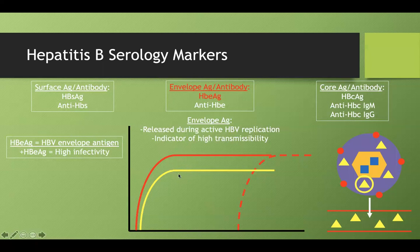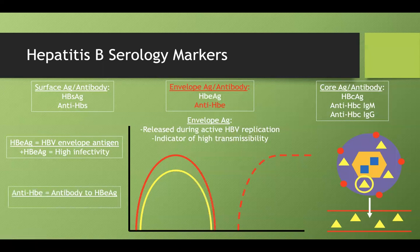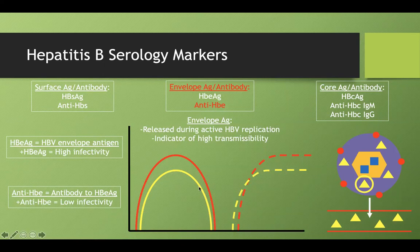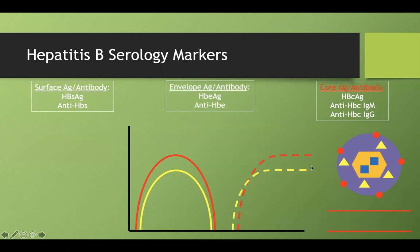If you have a positive envelope antibody, that indicates low infectivity — your antibodies have pushed down the antigen levels. In chronic hep B, the surface antigen is always positive, but the envelope antigen may or may not be elevated depending on the level of active viral replication.